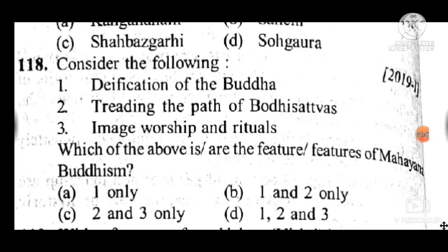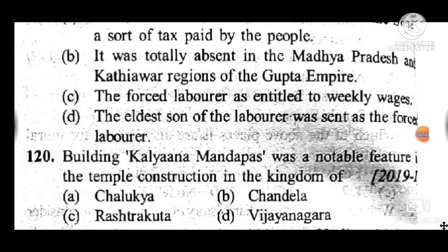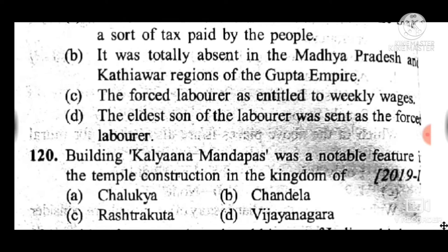Question 118: Consider the following features of the Buddha — treading the path of Bodhisattvas and image worship and rituals. Answer is D — all the statements are correct. Question 119: With reference to forced labour in India during the Gupta period, the correct statement is A — it was considered a source of income for the state, a sort of tax paid by the people. Question 120: Building of Kalyana Mandapas was a notable feature in temple construction in the kingdom of — answer is D, the Vijayanagara kingdom.